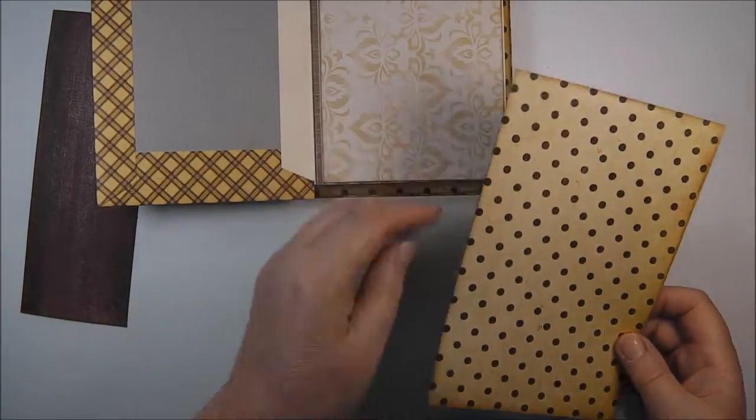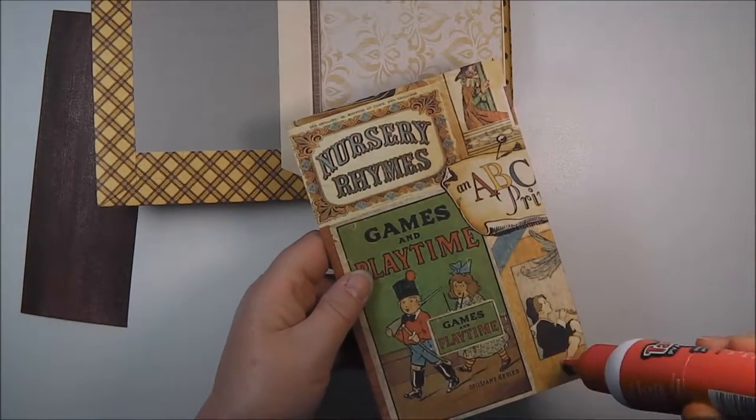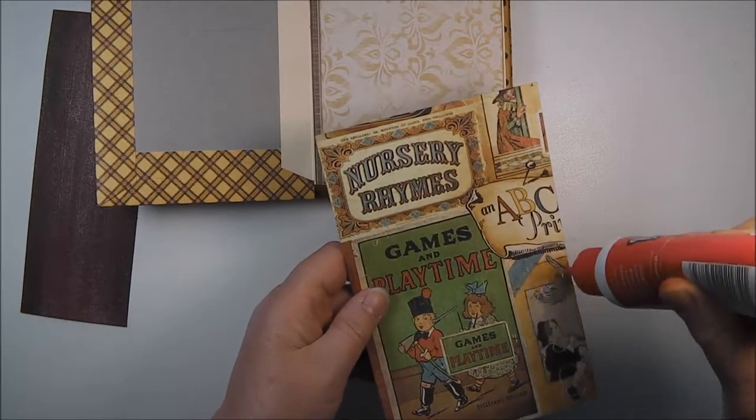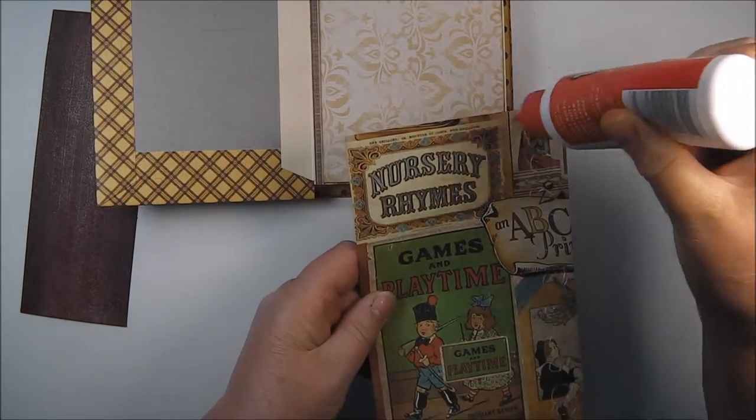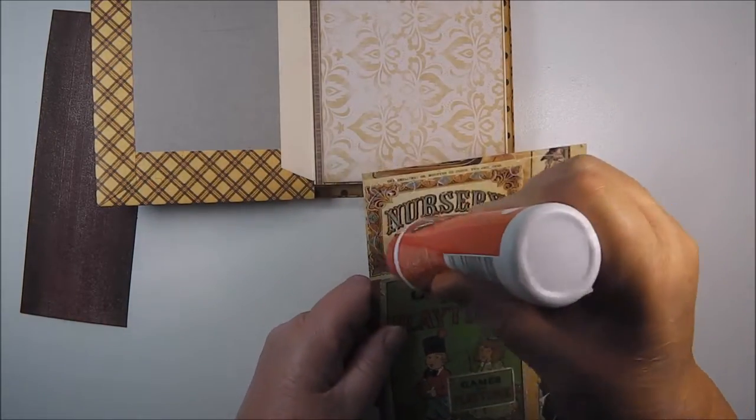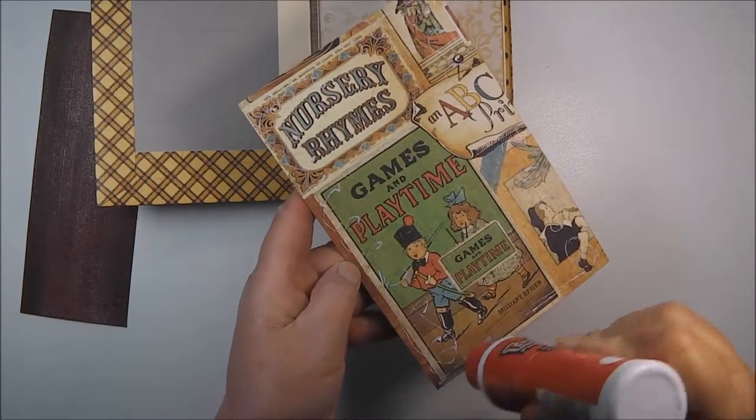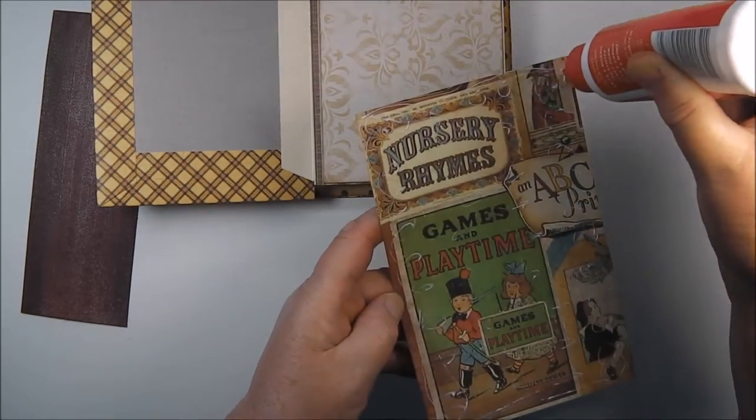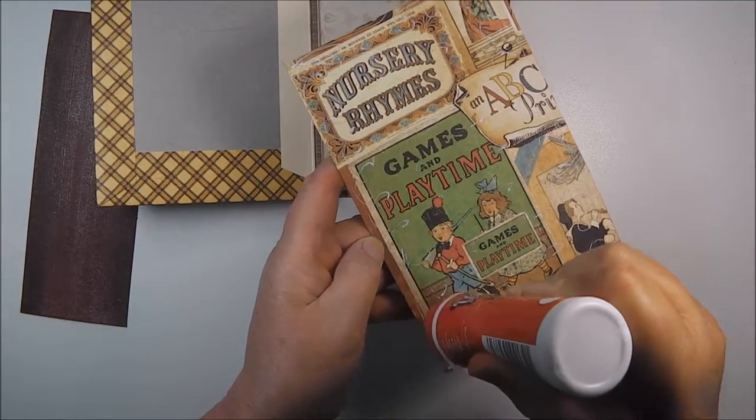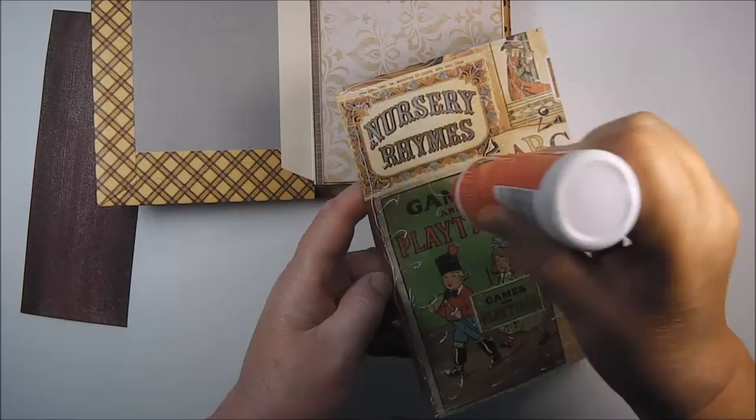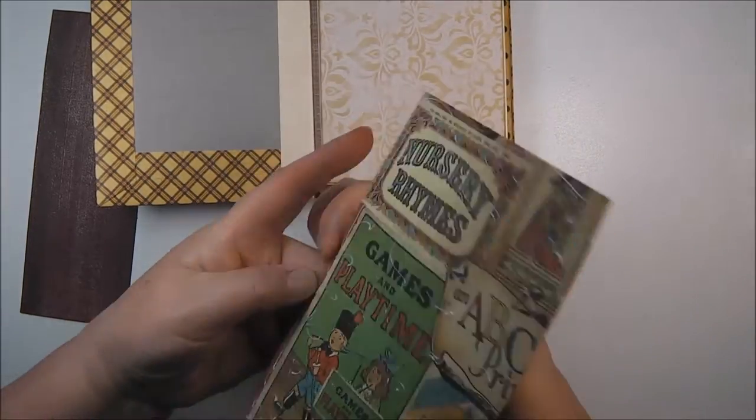Hello there, Di here. Today I'm just going quickly through the last stages of putting together my little tacker album. I've made this purposefully fairly plain, more of a masculine sort of coloring, using up some old paper lines that I had, mainly Kaiser Craft with a little bit of Graphic 45 as you can see there.